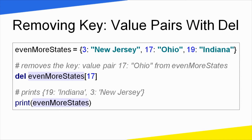Next, how do we delete a value? We use del with the dictionary name and square brackets with the key value. For example, del most_states[17] deletes the key 17 from the dictionary. After deletion, the dictionary has only 3 and 19 — New Jersey and Indiana — as remaining key-value pairs.